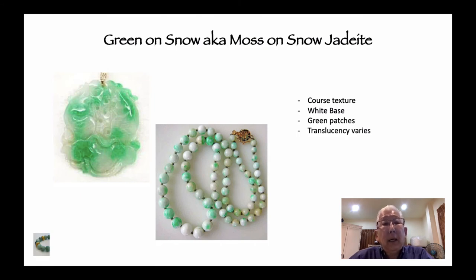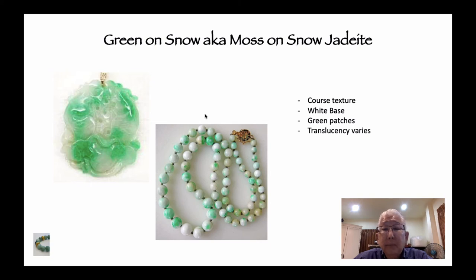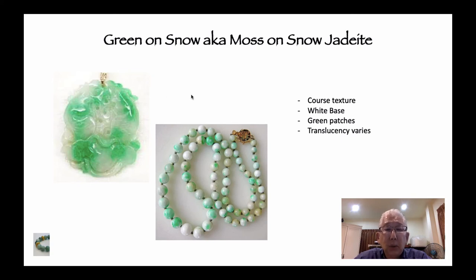Green on snow — moss on snow — I think these are beautiful. It's a pure white or clear jadeite with smatterings of rich green. They vary in quality based on texture, transparency, vividness of color, tone, hue, and saturation. This piece is more opaque, but nonetheless a very pretty necklace.